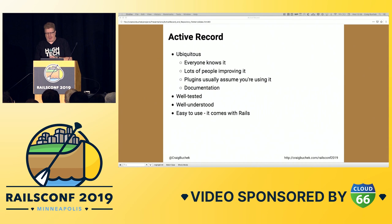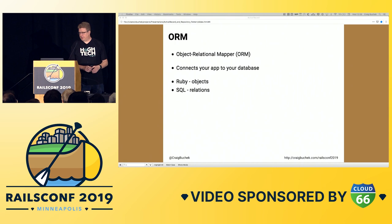Active Record is the 800-pound gorilla, and odds are, if you're going to work on Rails, if you get hired to work on Rails, you're going to be using Active Record.